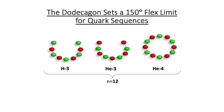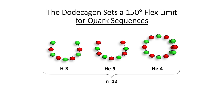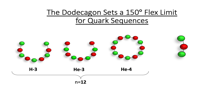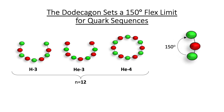The dodecagon is the smallest ring structure within the alternating quark model — no smaller ring structures agree with experimentally determined radii. This suggests a limitation to the degree to which any three-quark sequence may flex. The approximate limit equals the interior angle of a dodecagon, which is 150 degrees. In other words, the quark-to-quark interaction has a measure of laxity. This is important in understanding the structure of the next stable nuclide, lithium-6.